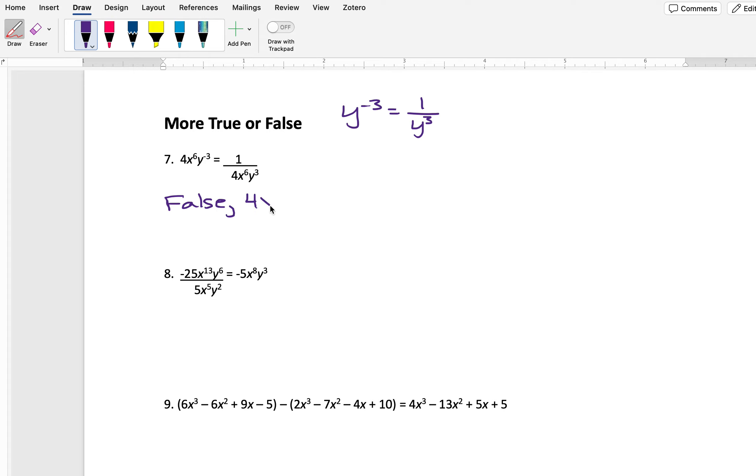Because 4x to the 6, y to the negative 3, the 4x to the 6 would stay on top of the fraction, and the y to the 3 would move to the denominator. So it would look like this: 4x to the 6 over y to the 3. So only y has the negative exponent. So it is the only thing that moves.